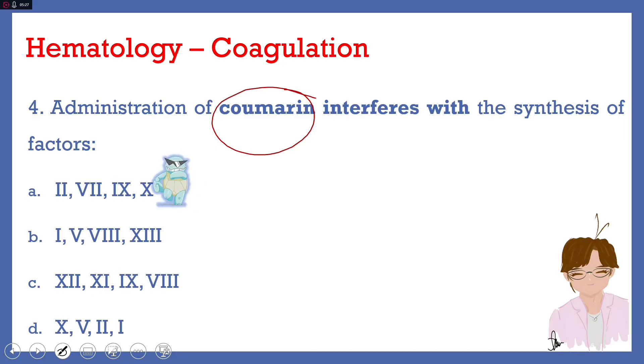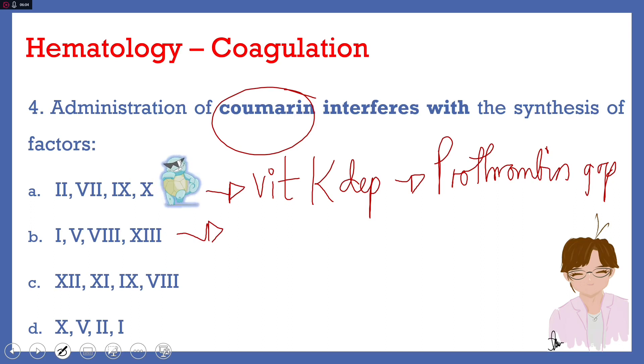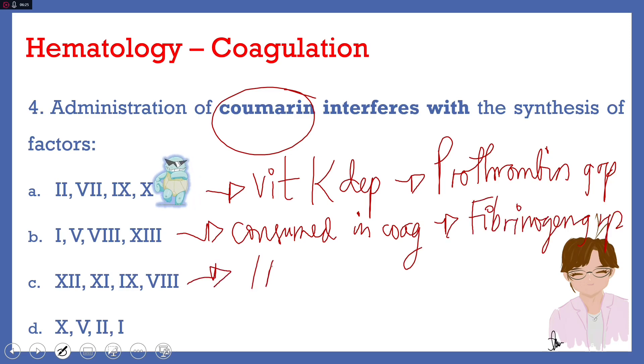Answer for number four is letter A. In these choices, there are other groups of coagulation factors to take note of. The group of II, VII, IX, and X, aside from being vitamin K dependent, are known as the prothrombin group. The group of factors I, VIII, and XIII, which are notably consumed during coagulation, are known as the fibrinogen group. Choice letter C will be the intrinsic factors, and choice letter D will be the common factors.